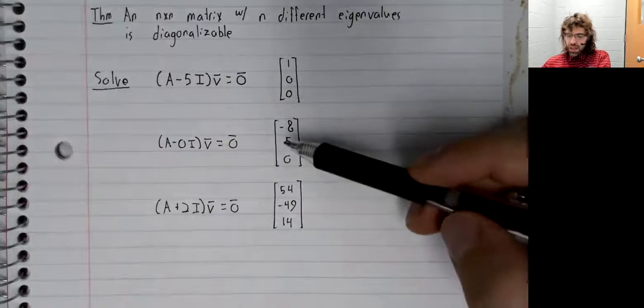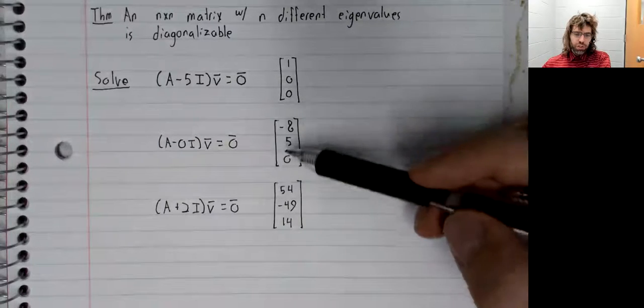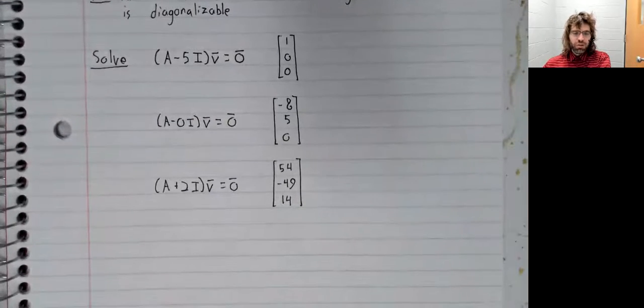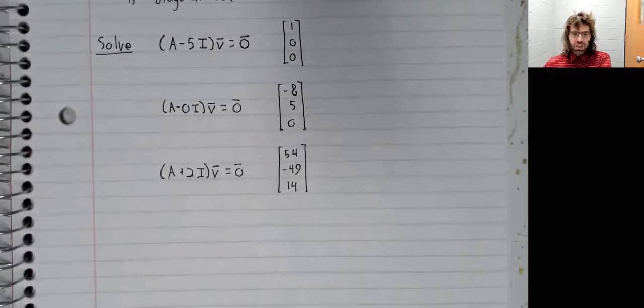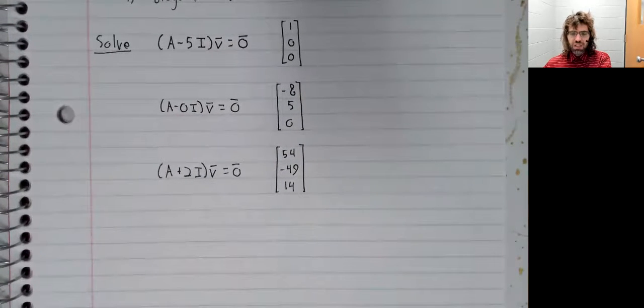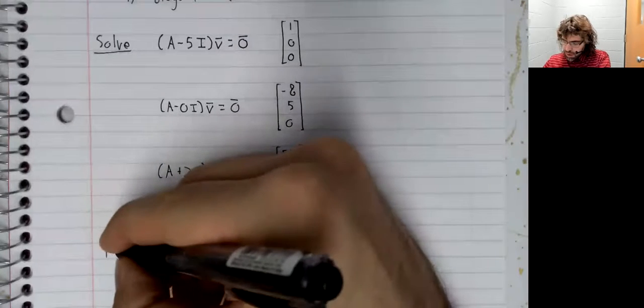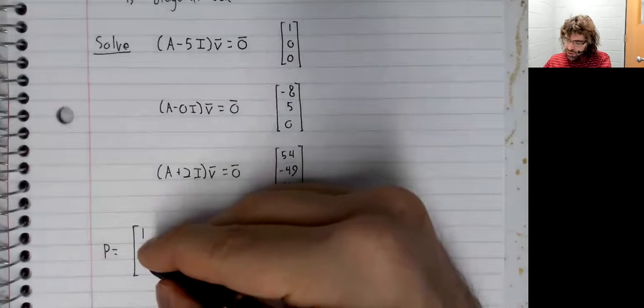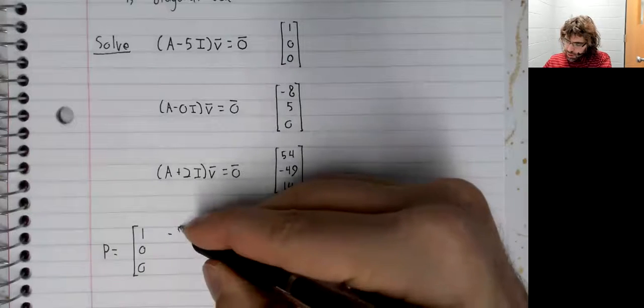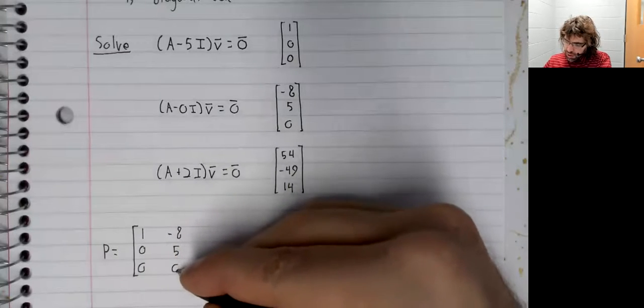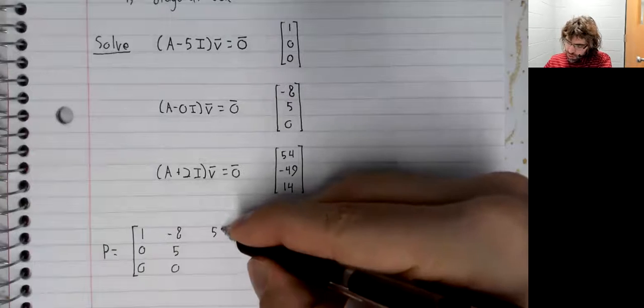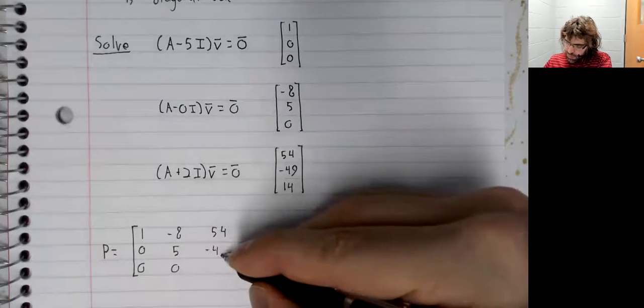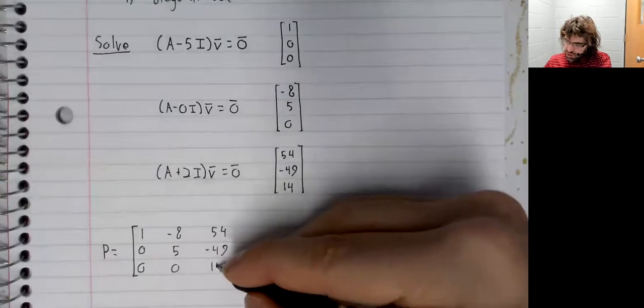And now we have three linearly independent eigenvectors. Again, they're guaranteed independent because they come from different eigenvalues. And to find P, we simply create the matrix that has these vectors as its columns.